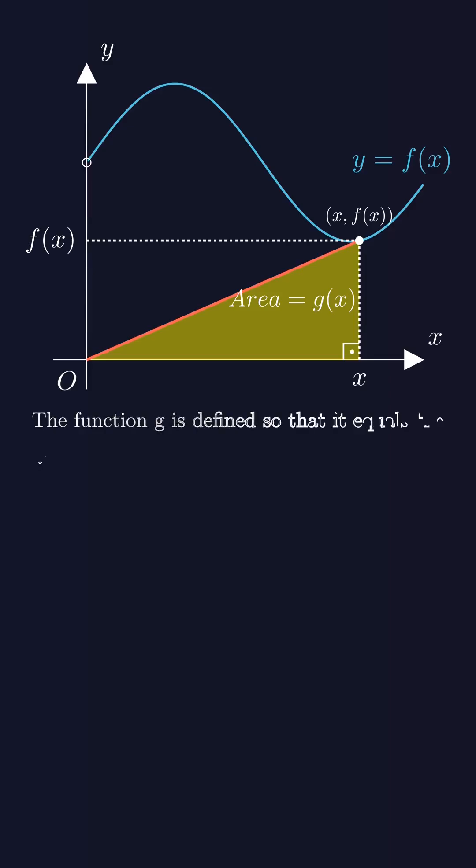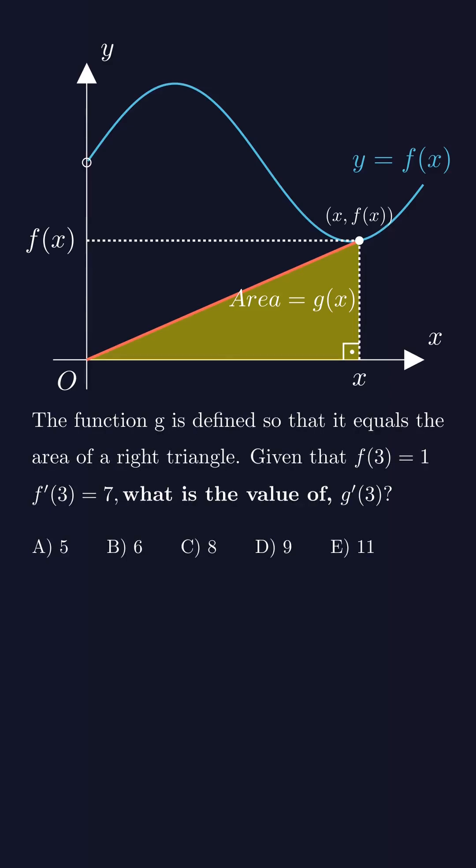The function g is defined to be equal to the area of the right triangle. We're given that f(3) is 1 and f'(3) is 7. We're asked to find the value of g'(3).